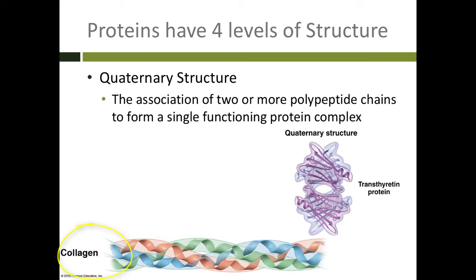Collagen, which is all over the place in your connective tissue, is actually made up of three long chains of proteins, each of which are separate. They come together in quaternary structure to make collagen.